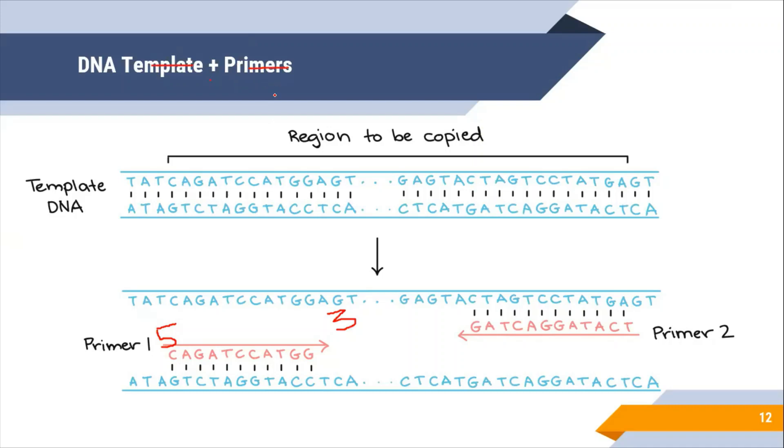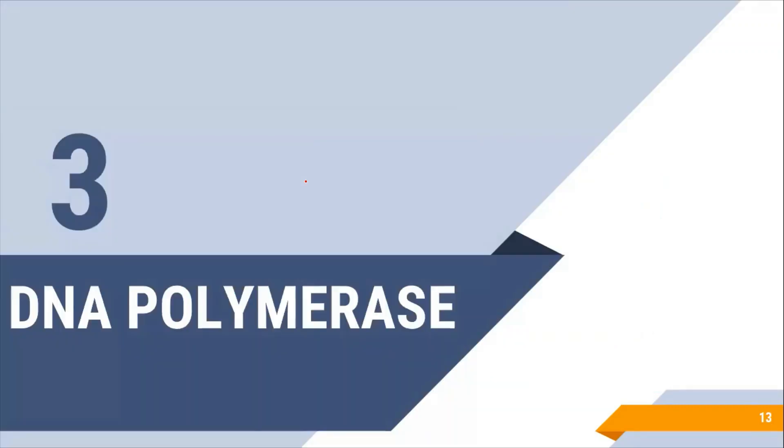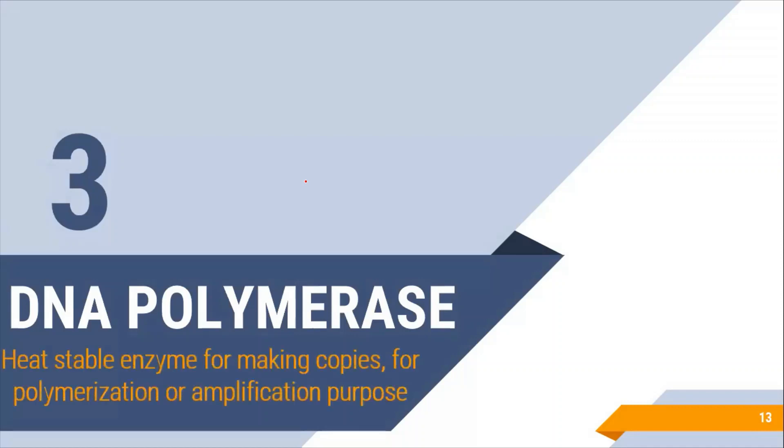Along with DNA template and primer, we further need DNA polymerase. Polymerase is the enzyme that is necessary for the polymerization or amplification purpose. It is heat stable DNA polymerase enzyme which helps in amplification or polymerization. Without this enzyme amplification could not start even though we have 3' prime end.